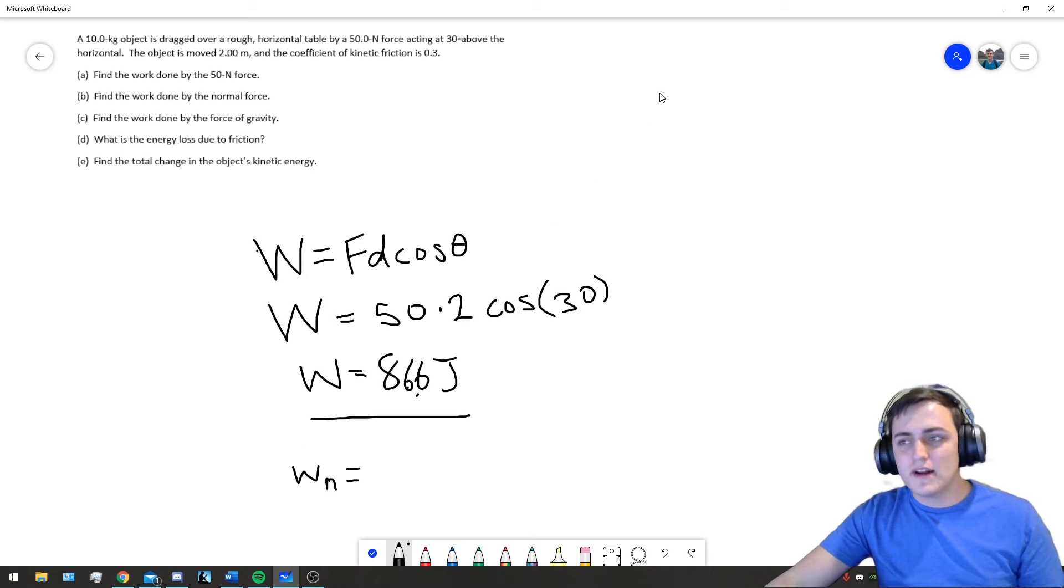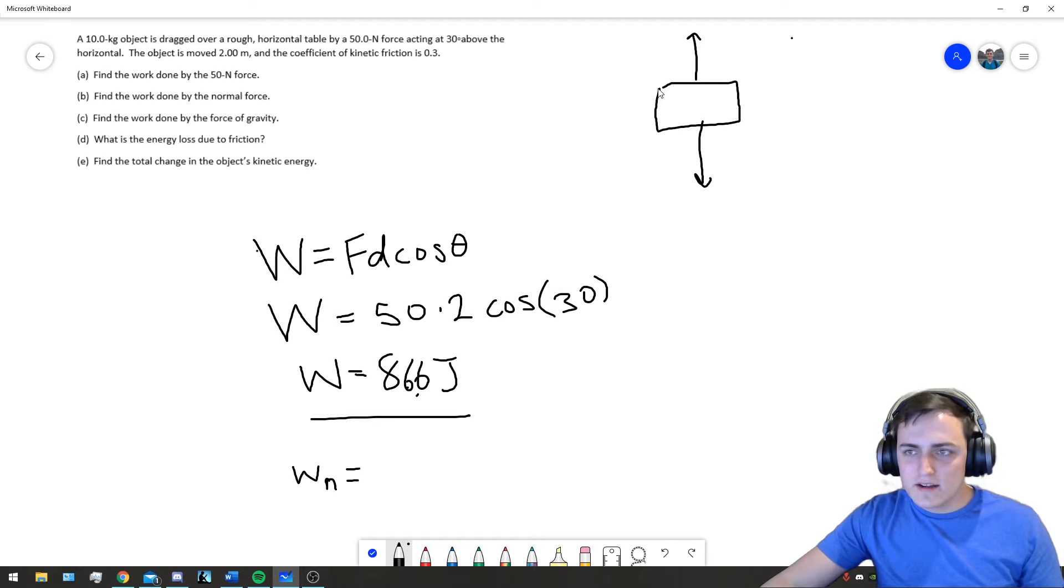We know, we could draw a free body diagram. And, it's dragged over a horizontal table. So, what we have to do is make sure that our forces point in the right direction. We know it's 30 degrees above the horizontal. It's being dragged. So, this is the direction our force points. And, we've got a friction force. And, we can calculate the magnitude of the force, FN,